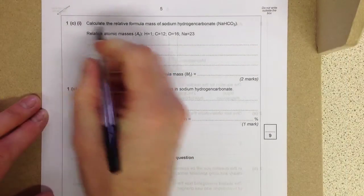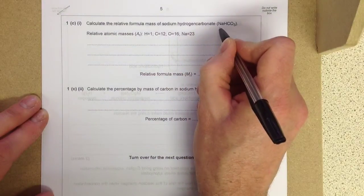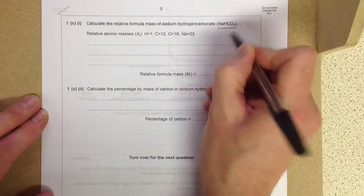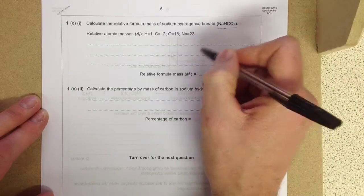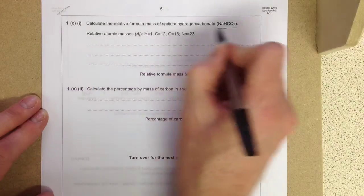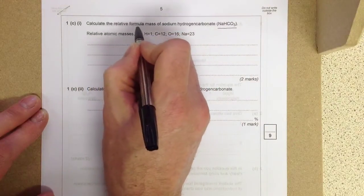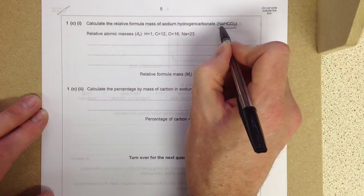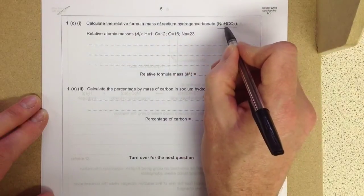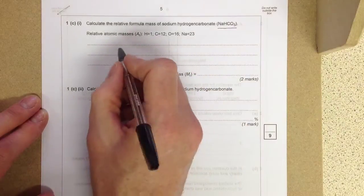The last bit of question one. Calculate the relative formula mass of sodium hydrogen carbonate, NaHCO3. The formula for the molecule and we've been given all the relative atomic masses. What you might need to remember is when you add up all the relative atomic masses of what's present in the molecule, it calculates the relative formula mass. So how many sodiums we've got? One. How many hydrogens? One. How many carbons? One. But we have three oxygens. So we'll just add all those together.